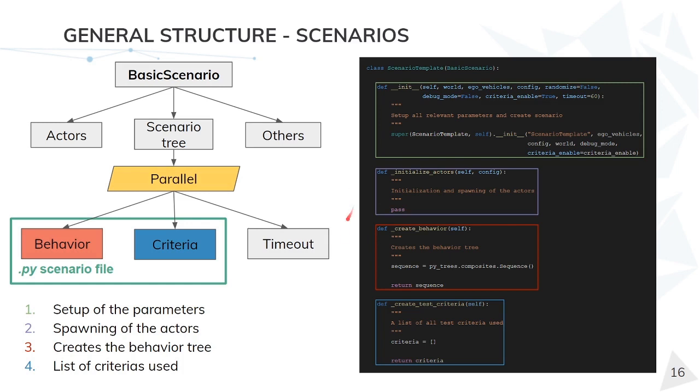The third one creates the behavior tree of the scenario. And the last one creates the criteria. Here we just have to return a list of all the criteria and the behavior tree is automatically done by the basic scenario.